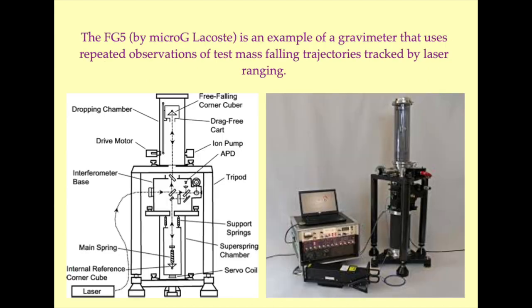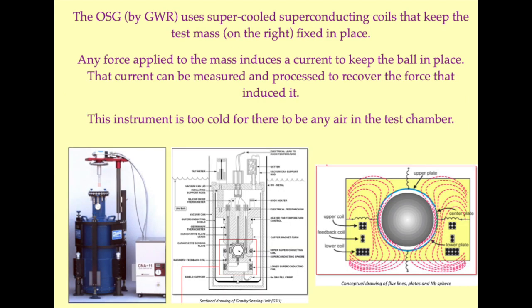The FG5 is an example of a style of gravimeter that uses repeated drops of a reference mass. During each drop, the trajectory of the reference mass is tracked by laser interferometry. Superconducting gravimeters, such as the one illustrated here, use a niobium test mass suspended in an electromagnetic field. Any force acting on the test mass will instantly induce a resistant current, and the magnitude of that current can be used to measure the nature of the force applied.